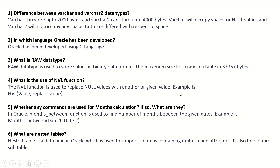What is the use of the NVL function? The NVL function is used to replace null values with another given value. Example: NVL(value, replace_value). Whether any commands are used for months calculation — in Oracle, MONTHS_BETWEEN function is used to find the number of months between given dates. Example: MONTHS_BETWEEN(date1, date2).